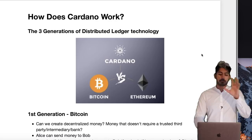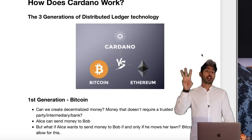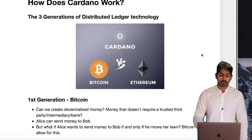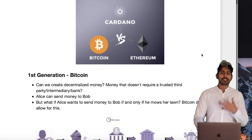Let's start off with Bitcoin. There have been three generations of distributed ledger technology so far. The first generation was obviously Bitcoin — you got Litecoin and all the initial altcoins — but the idea was always the same: can we create decentralized money? And the answer was yes — money that doesn't require a trusted third party.